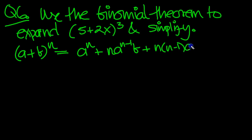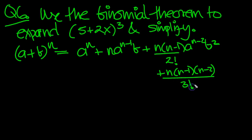...times a to the (n-2) times b squared over 2 factorial, plus n(n-1)(n-2) over 3 factorial times a to the (n-3) times b cubed, and so on. It just carries on in that expansion down to the end. So that's just the first few terms, which is all we're going to need for this.